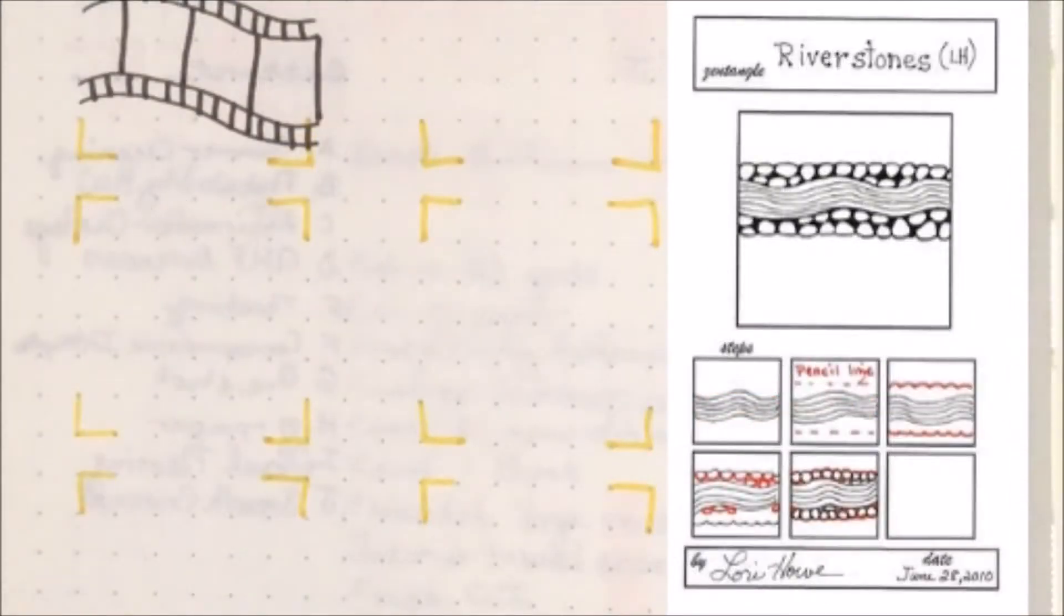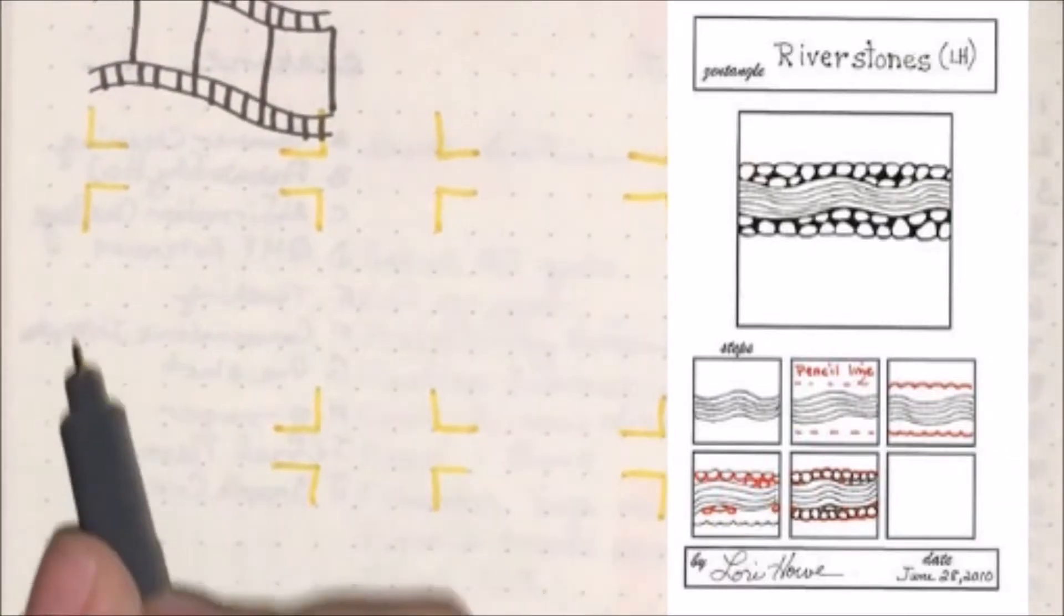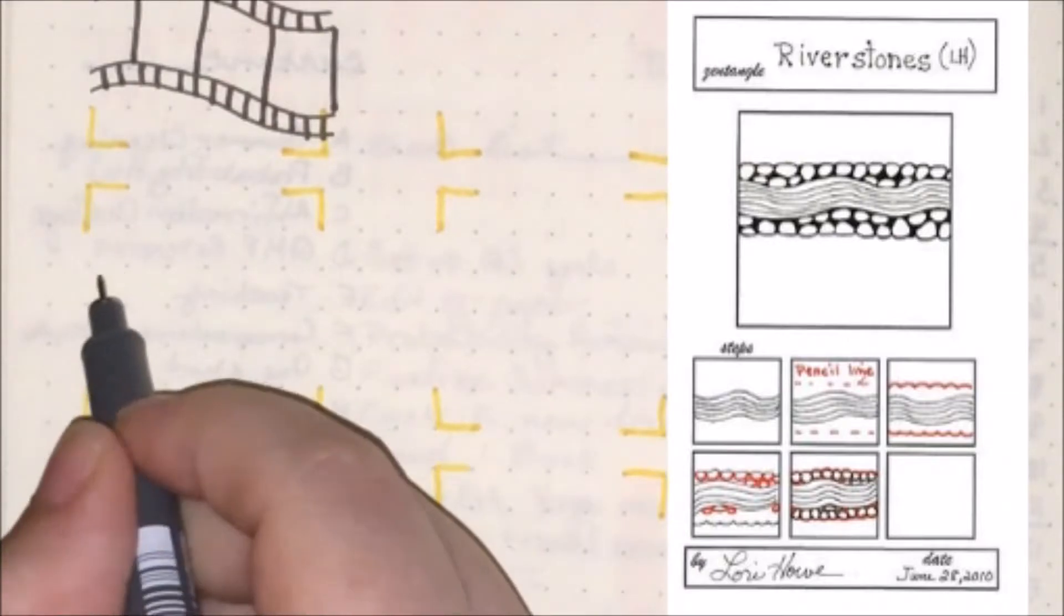The next doodle I have for you all today is called Riverstones, and it's also by Lori Howe. The way you want to get started with this one is we are going to start by drawing a river, and the way we do that is